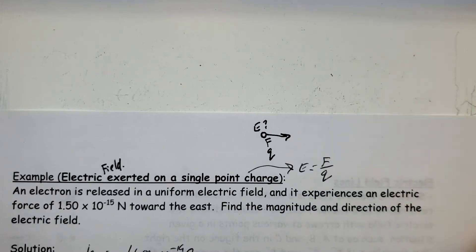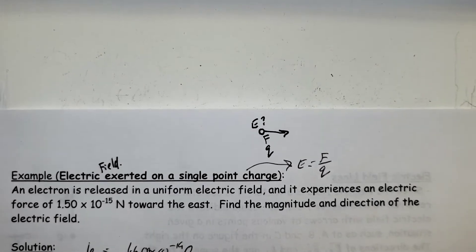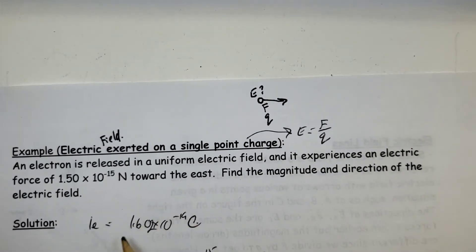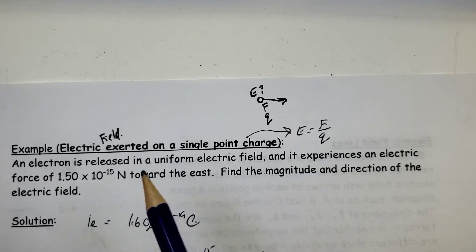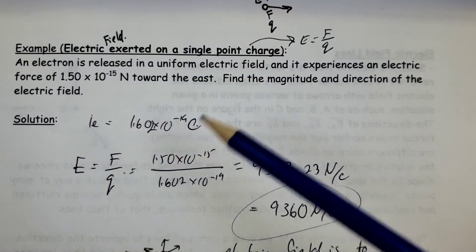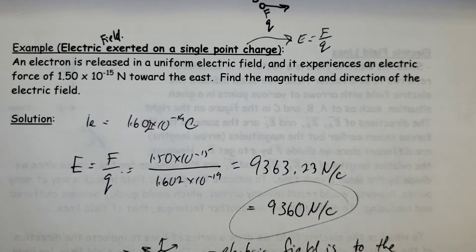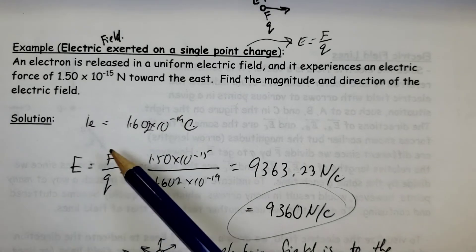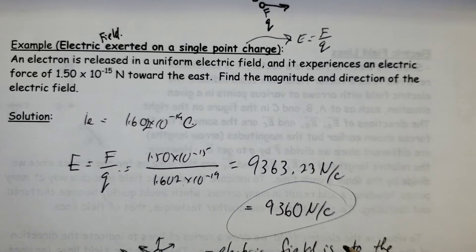Here we have the test charge that is undergoing an effect in an electric field. It's an electron, so we know its charge is 1.602 times 10 to the minus 19, and we know the force. We can figure out the force it's experiencing on an electron, and we get 9,363.23 newtons per coulomb. Because this is newtons, this is coulombs, newtons per coulomb. I can round it off to three sig figs, 9,360.